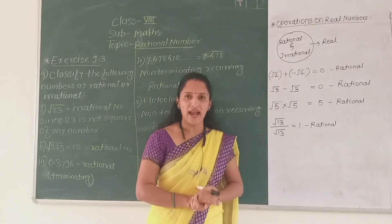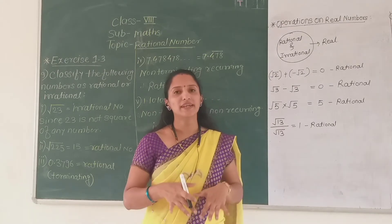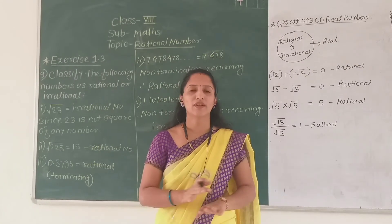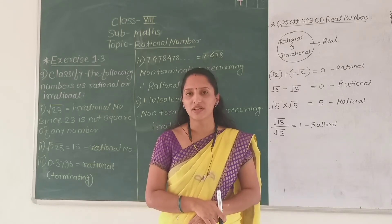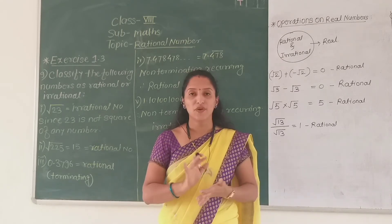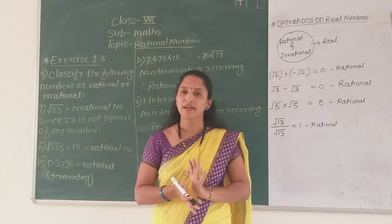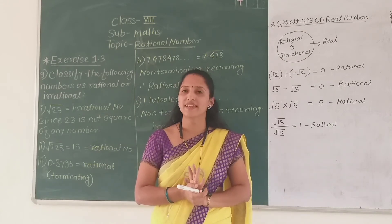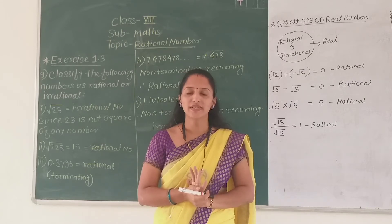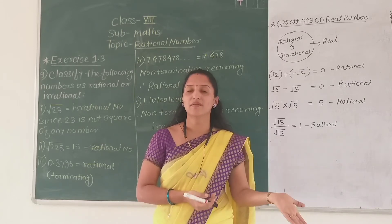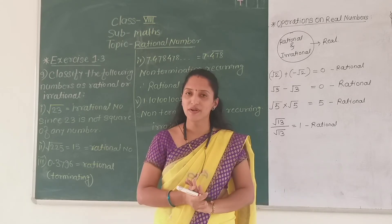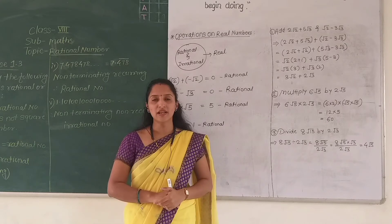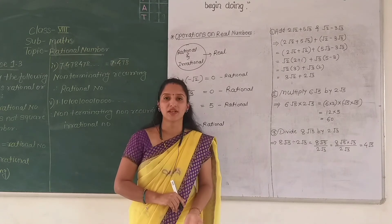That means when we add, subtract, multiply, or divide two irrational numbers, we will not always get an irrational number. But if we add, subtract, multiply, or divide two rational numbers, we will always get a rational number. This is the difference between rational numbers and irrational numbers.